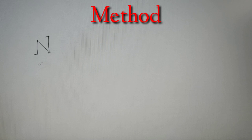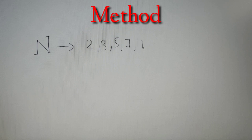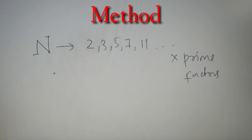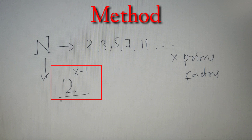Moving on with our method. Given a number n, we have to find in how many ways we can write n as a product of two co-prime numbers. The first step is to find the number of prime factors of n. If n has x distinct prime factors, then the number of ways in which it can be written as a product of two co-primes is equal to 2 raised to the power (x − 1). By this simple formula we can easily find the answer for any number.